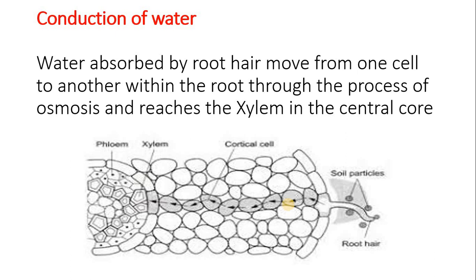Now, how is water conducted to all parts of the plant? Water is taken from the soil by the root hair. It moves from one cell to another within the root through the process of osmosis and it reaches the xylem. Xylem is the vascular tissue that is present in the central core of the stem.